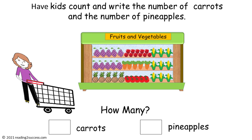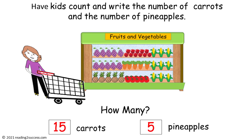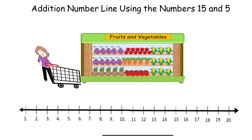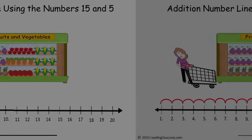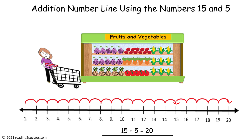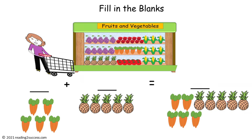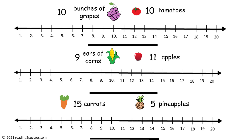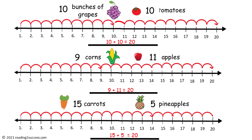Now have kids count and write the number of carrots and the number of pineapples. The answer is fifteen carrots and five pineapples. Now have kids complete the addition number line using the numbers fifteen and five. This is a completed example. Now have kids fill in the blanks, and the completed equation is fifteen carrots plus five pineapples equals twenty carrots and pineapples. Now have kids complete these three number lines, and the answers are ten plus ten equals twenty, nine plus eleven equals twenty, and fifteen plus five equals twenty.